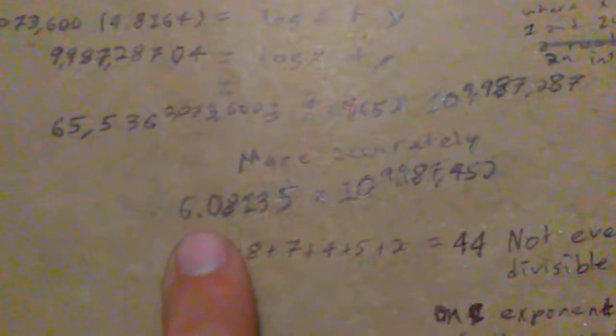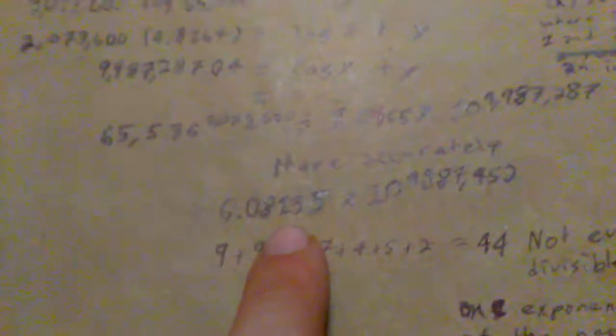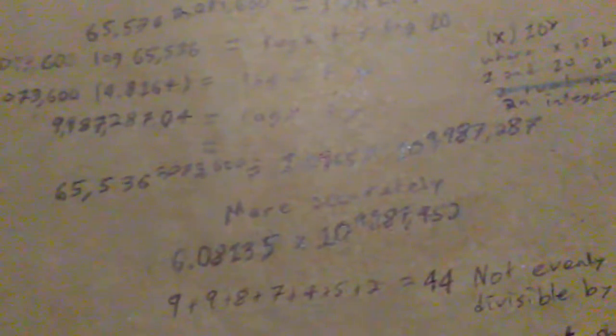So on my calculator, I got a more accurate number that gave us the number 6.08315 times 10 to the 9,987,455 power.